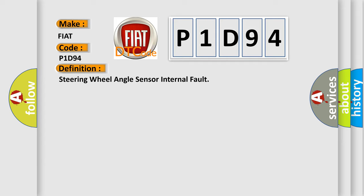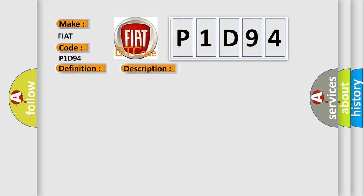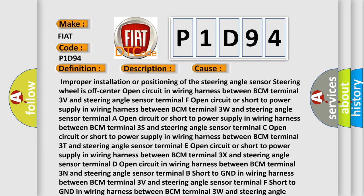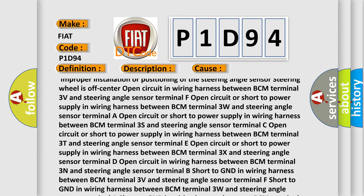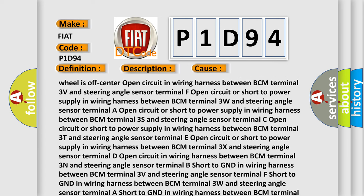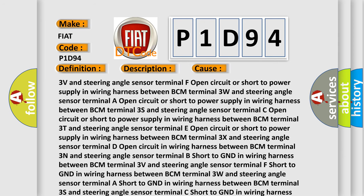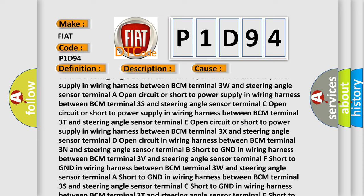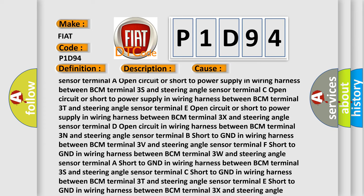The basic definition is: Steering wheel angle sensor internal fault. BCM detects steering angle sensor internal abnormality — signal overflow. This diagnostic error occurs most often in these cases: improper installation or positioning of the steering angle sensor (steering wheel is off center); open circuit in wiring harness between BCM terminal 3V and steering angle sensor terminal F; open circuit or short to power supply between BCM terminal 3W and steering angle sensor terminal R; open circuit or short to power supply between BCM terminal 3S and steering angle sensor terminal C; open circuit or short to power supply between BCM terminal 3T and steering angle sensor terminal E.